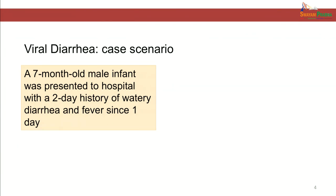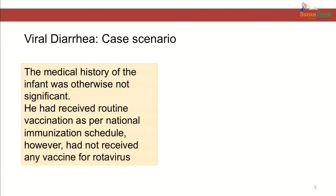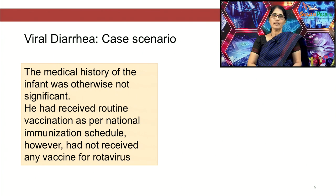Let us begin this session with a case scenario. A 7-month-old male infant presented to a hospital with a 2-day history of watery diarrhea and fever since 1 day. The infant was reported to have 12 watery stools which were bloodless over the previous 24 hours, during which he became unsettled. He was crying a lot and accepted only half of his usual amount of fluid intake. There was no history of vomiting. The medical history of the infant was otherwise not significant. He had received routine vaccination as per the national immunization schedule.